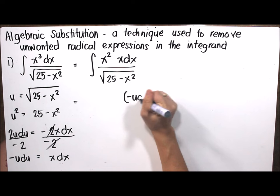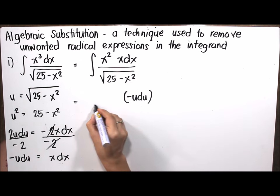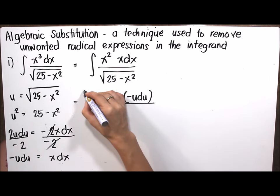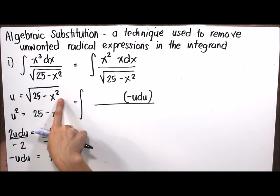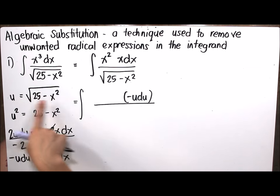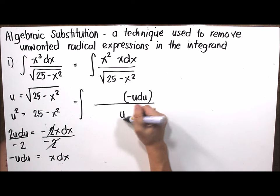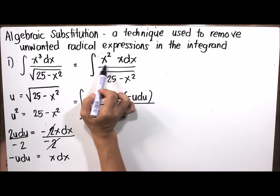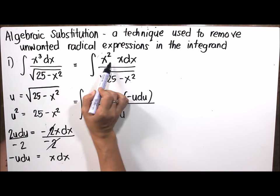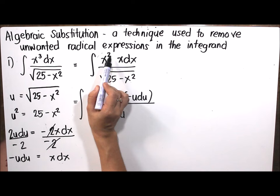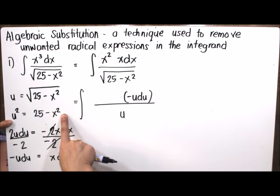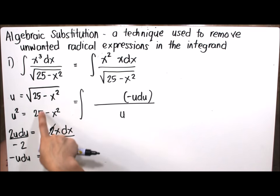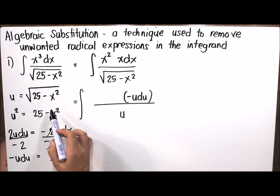For x dx, we replace it with negative u du. The square root of 25 minus x squared is replaced by u. However, we still have x squared remaining, so we need to find the equivalent value of x squared.